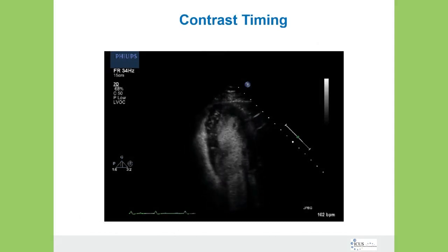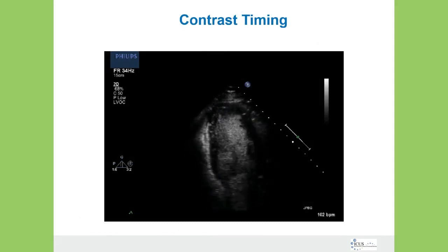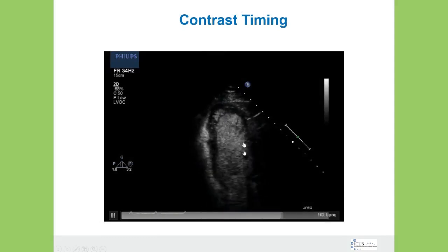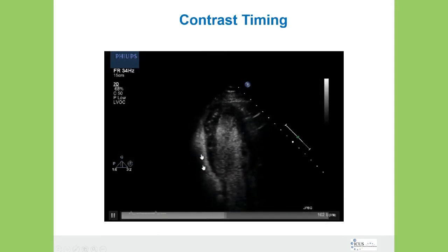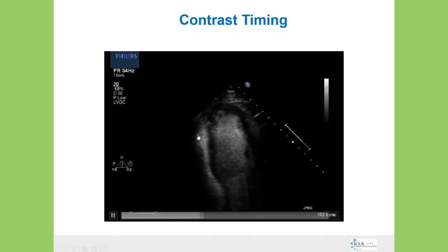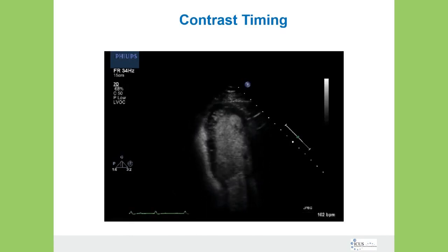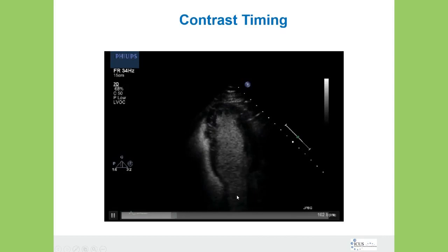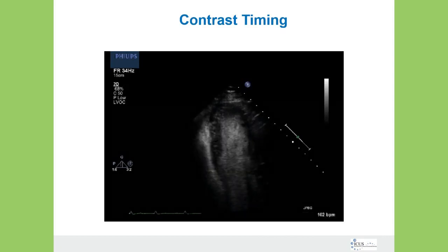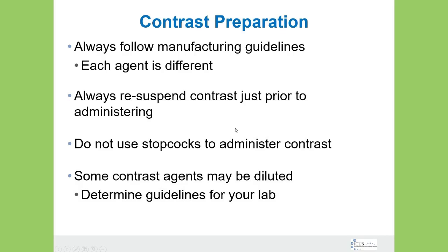Here's an example of contrast timing where it's not exactly perfect. We do see some contrast in the left ventricle, but over here we see a lot more contrast in the right ventricle. The contrast was probably just injected and we haven't given it time to get into the left ventricle in adequate concentration. You have to wait it out and let the contrast come over into the left ventricle and properly concentrate there instead of being in the right.